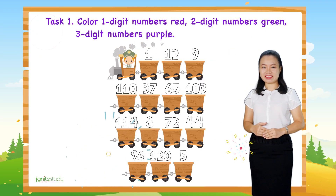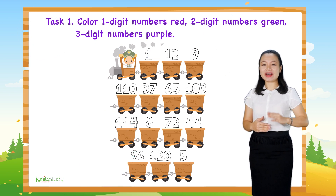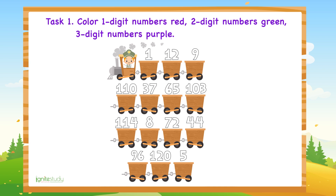Have you finished? Now check if you put the right color on the number. First, we have number 1. This is a 1-digit number, so let's color it red. Next, we have number 12. This is a 2-digit number, so let's color it green. Next, we have number 9. This is a 1-digit number, so let's color it red. Next, we have number 10. This is a 2-digit number, so let's color it green.